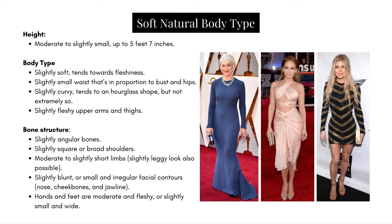Height: moderate to slightly small, up to five feet seven inches. Body type: slightly soft, tending towards fleshiness. Slightly small waist in proportion to bust and hips, slightly curvy, tends to an hourglass shape but not extremely so. Slightly fleshy upper arms and thighs. Bone structure: slightly angular bones, slightly square or broad shoulders, moderate to slightly short limbs. Might have a slightly leggy look. Slightly blunt or small and irregular facial contours in the nose, cheekbones, and jawline. Hands and feet are moderate and fleshy, or slightly small and wide.